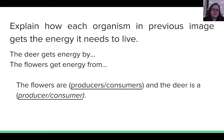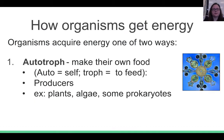And the flowers — are they producers or are they consumers? What about the deer? How do organisms get their energy? There are two different ways that organisms get energy. One is that they might be called an autotroph. Autotrophs make their own food. Examples of autotrophs are plants, algae, and some prokaryotes. Autotrophs are producers.